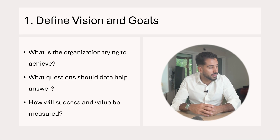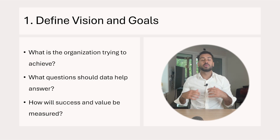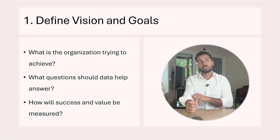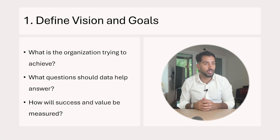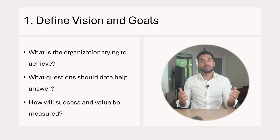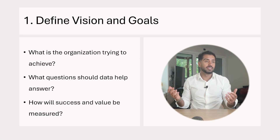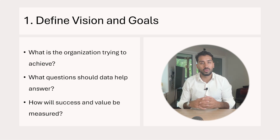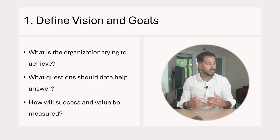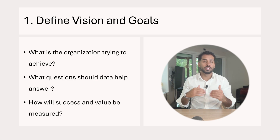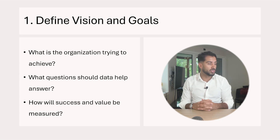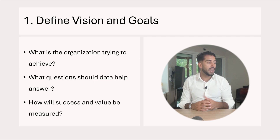The second point is: what questions should data help answer? There should be specific questions in mind — how many sales did we do last quarter, who are our top salespeople, how did different departments do against their budget or forecast? We need to know on different levels what it is we're trying to answer.